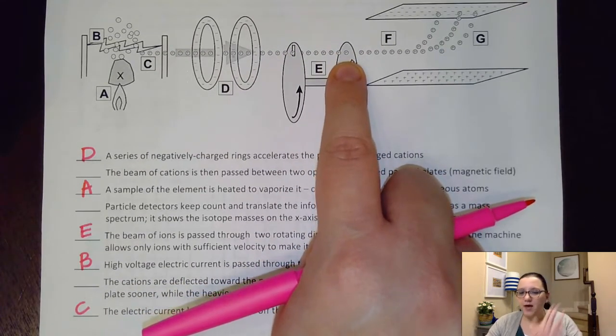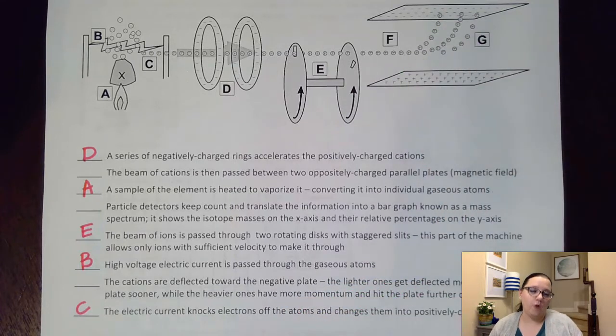So what that means is that we want cations that are moving very fast. If they're not moving fast enough, what happens is that this next step doesn't work properly. The deflection doesn't happen on the next step. So this step E here just ensures that our particles are moving at particular speeds and any slower ones will get dropped off by the wayside.